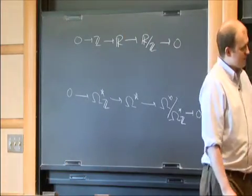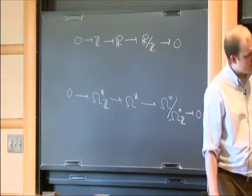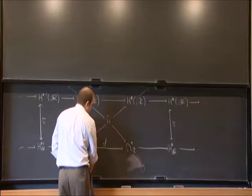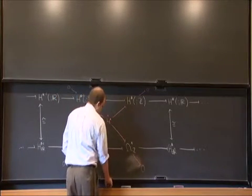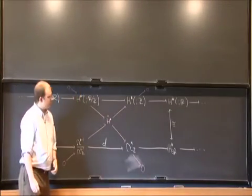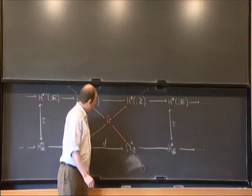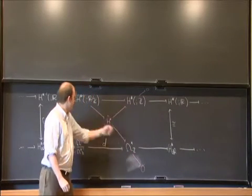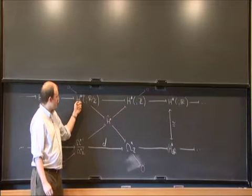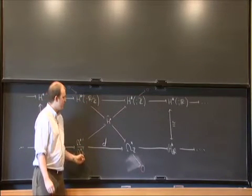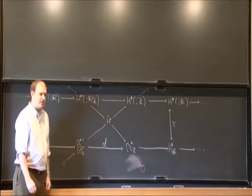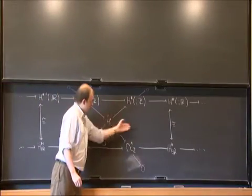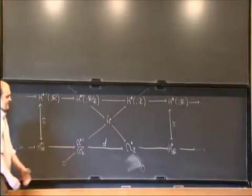A differential cohomology theory in this context, at least for ordinary integral cohomology, is going to be a functor H-hat to graded abelian groups, which comes equipped with four natural transformations into the integral period forms and the integral cohomology, and has two natural transformations from the R mod Z coefficient cohomology and these quotient forms. We want the diagonal sequences to be exact, and we require all four of these cells to commute. That's a differential cohomology theory.